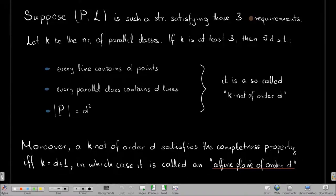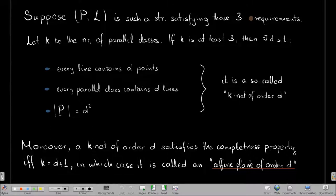Moreover, a k-net of order d satisfies the completeness property if and only if the number of parallel classes is precisely d plus one, in which case it is called an affine plane of order d. One can describe the same combinatorial object using orthogonal Latin squares or in terms of projective planes, but I chose to view it as an affine plane of order d because this is how you will see the similarities with mutually unbiased bases.